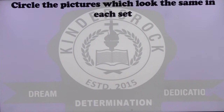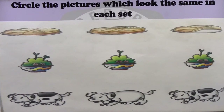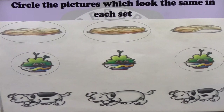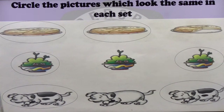Circle the picture which looks the same in each set. There we have the picture of three pizzas — which two look similar? There we have it, those are the ones which look similar. And there we have a bowl full of custard, and those are the ones which look similar. We also have the doggy — which of them look similar? These are the doggies that look similar. You have to circle the pictures which look the same in each set.